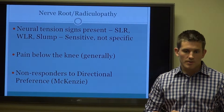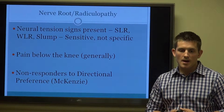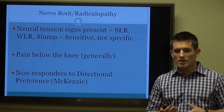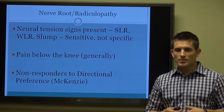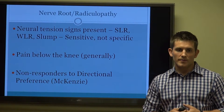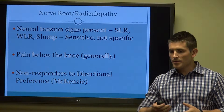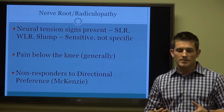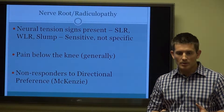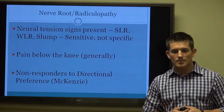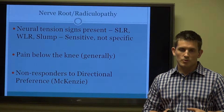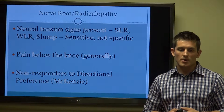In terms of the nerve root or radiculopathy, we want to look for neural tension signs: straight leg raise, well leg raise, slump test. All of these are very sensitive but not very specific, so you may have to further delineate with other testing such as EMG or NCV studies. Generally, we're going to find pain below the knee, and these would be the non-responders to directional preference, which would be a McKenzie assessment.